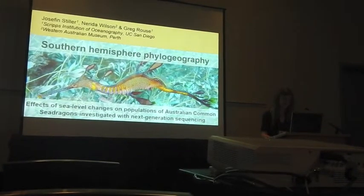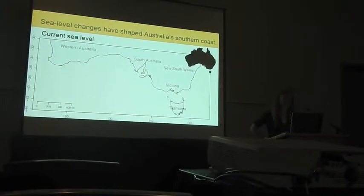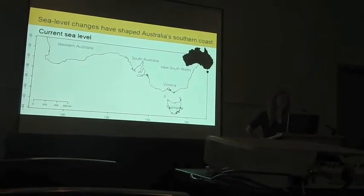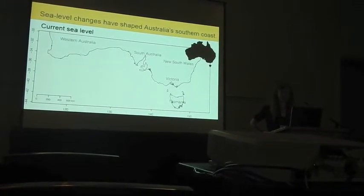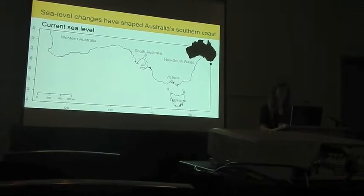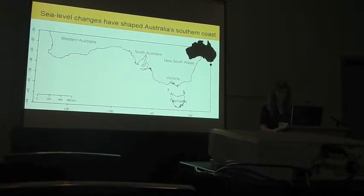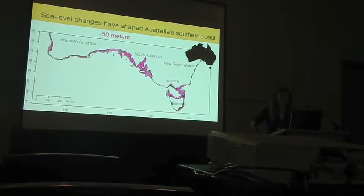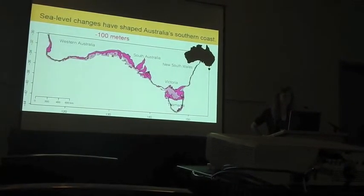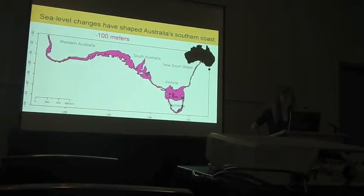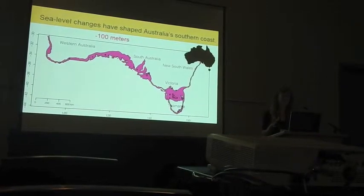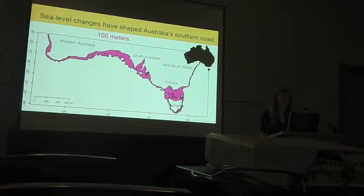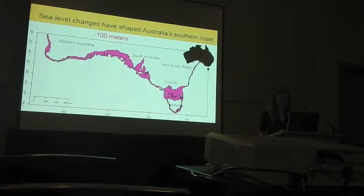I'm taking you to a marine system in the southern hemisphere where we will be focusing on Australia's temperate coast. Australia's southern coastline is a prime example of a coastline that has been changed by Pleistocene glaciations and associated sea level changes. Here we see the current sea level of the temperate coastline, and we will now move backwards in time as sea level drops. We are stopping here at about 100 meters below current sea levels — the lowest sea level stands during the last glacial maximum, 17,000 to 20,000 years ago.